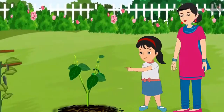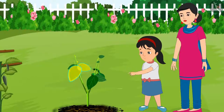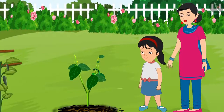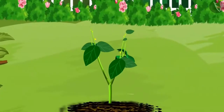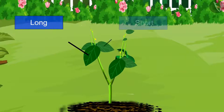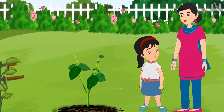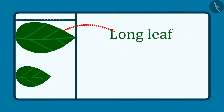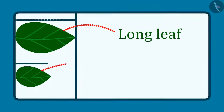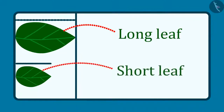Mommy, look at these two leaves. They both are different. Yes Pinky, the length of both of these leaves is different. Out of these two leaves, this leaf is long and this leaf is short. This means that out of these two, this is the long leaf and this is the short leaf.